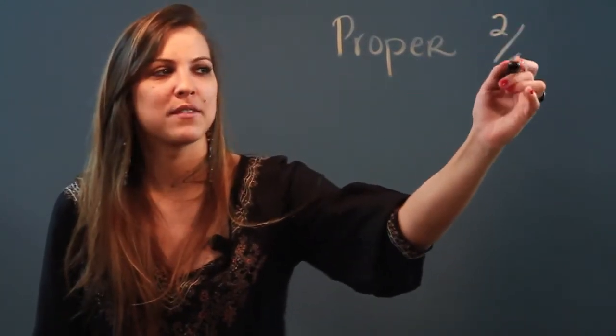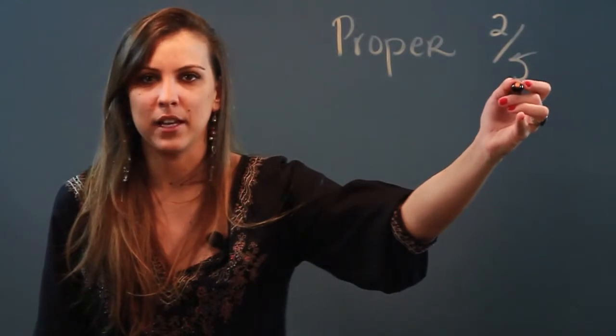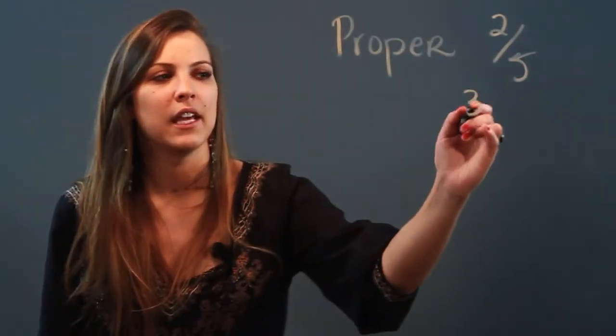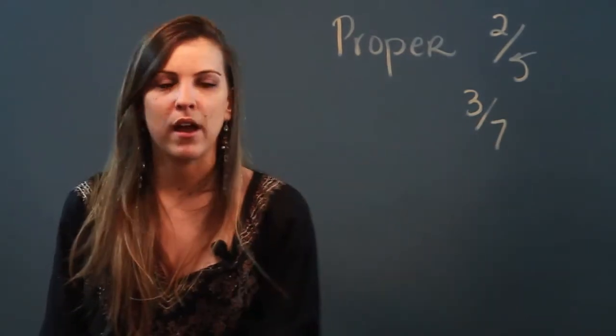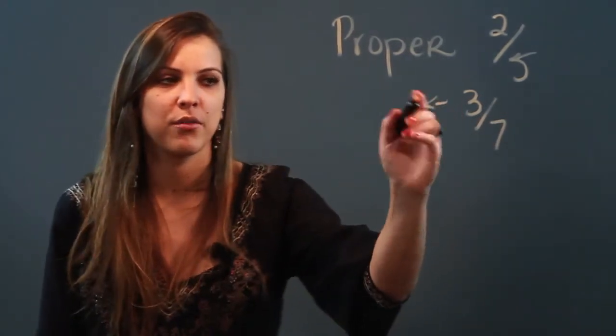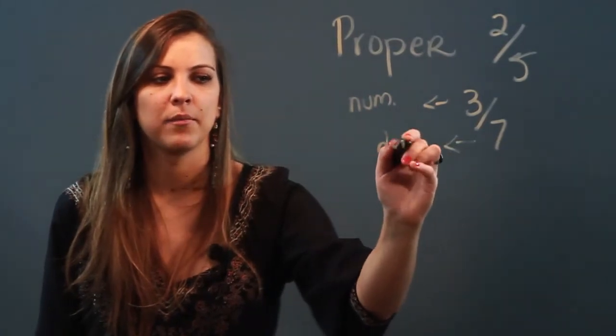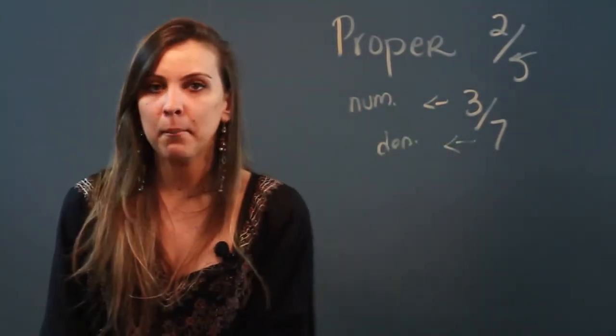For example, two-fifths—the numerator is less than the denominator. Let's do some more examples of proper fractions. Three-sevenths is a proper fraction because the numerator three is less than the denominator seven.